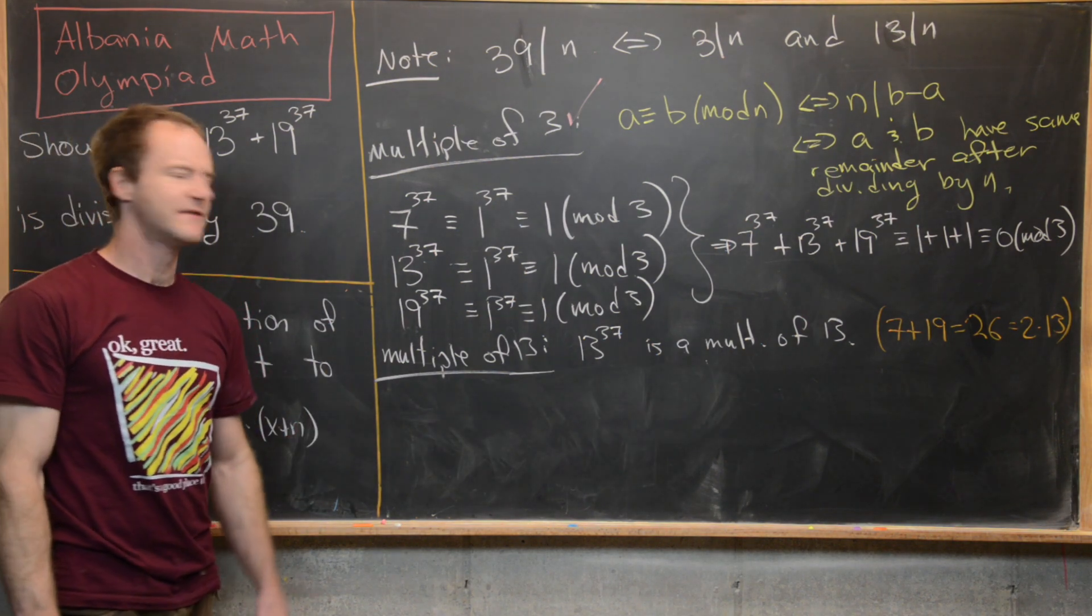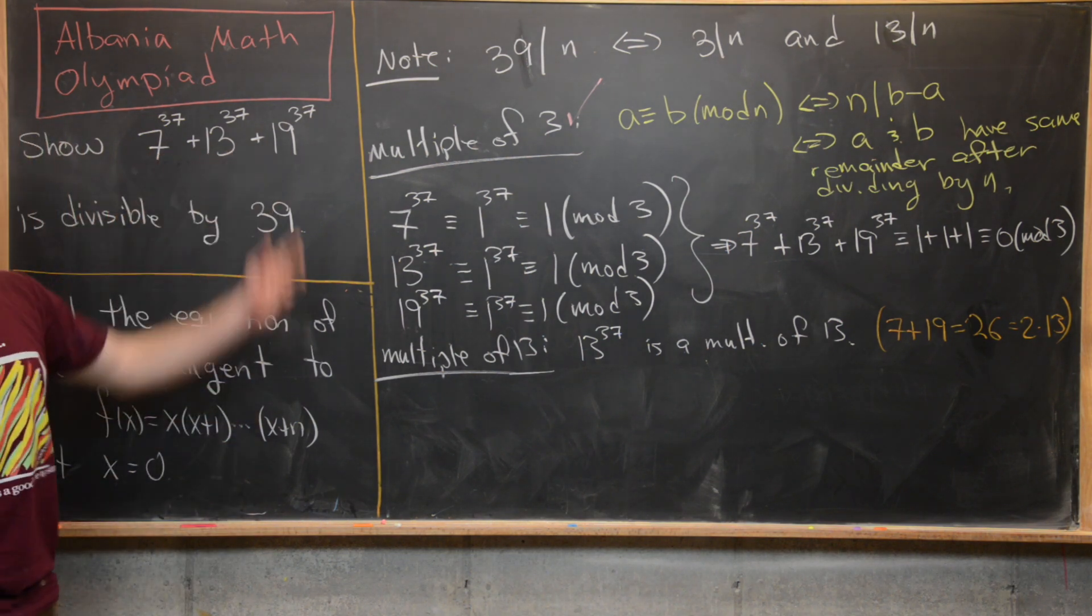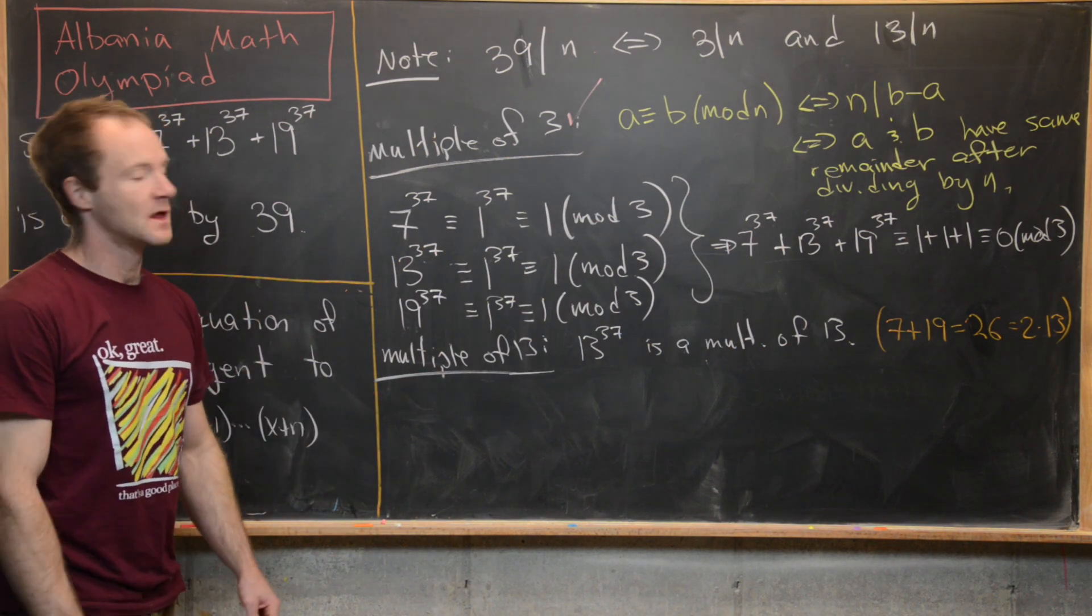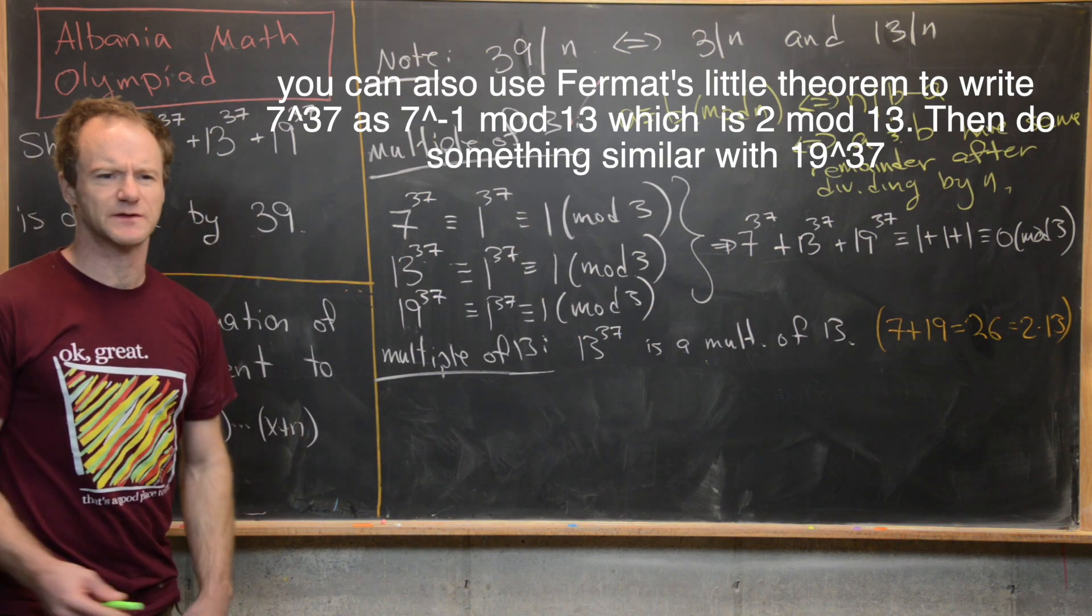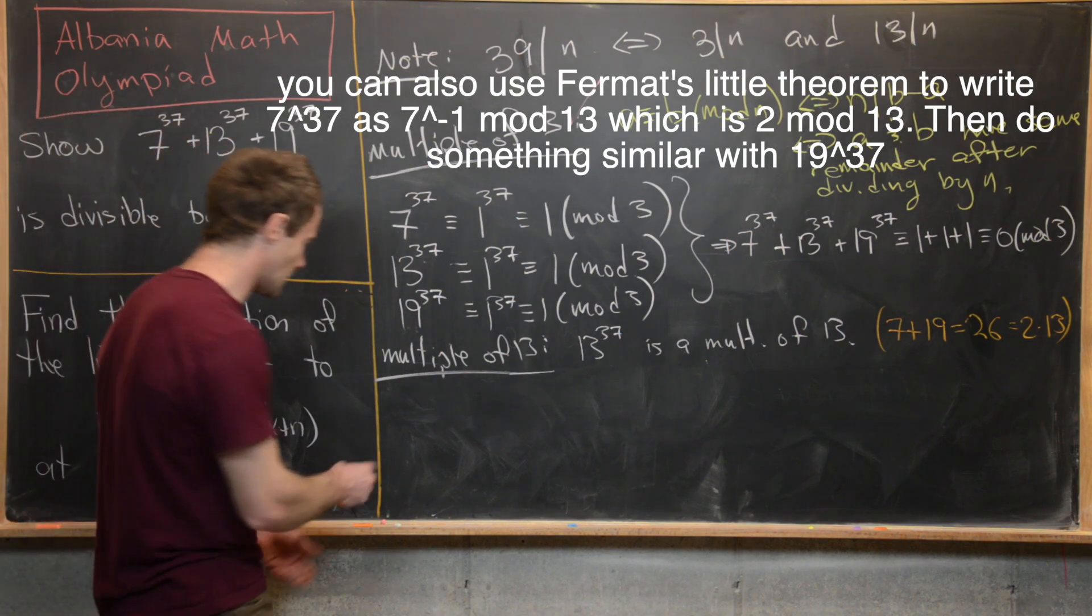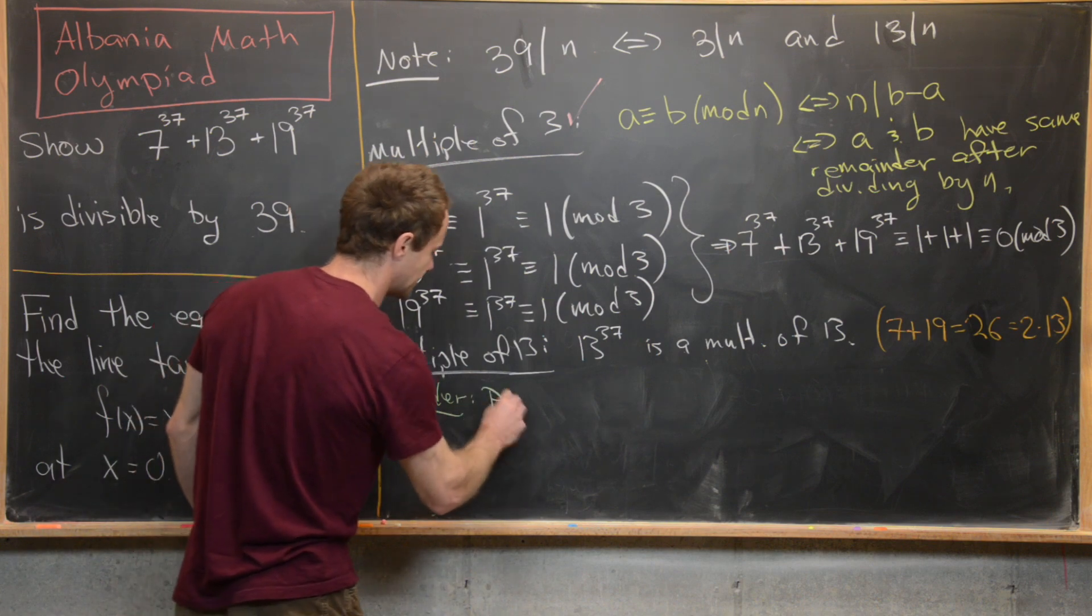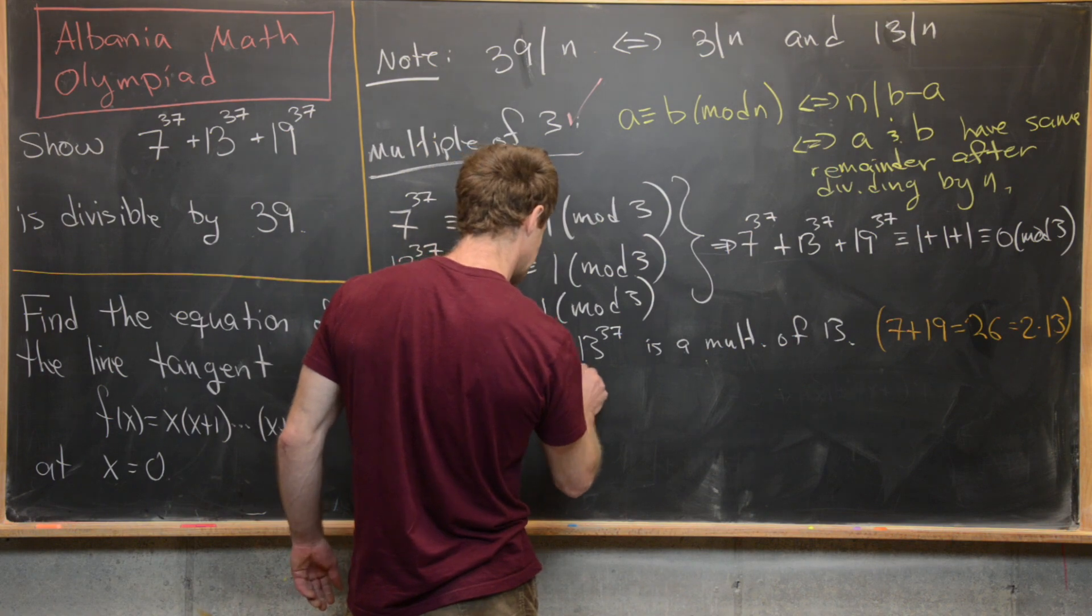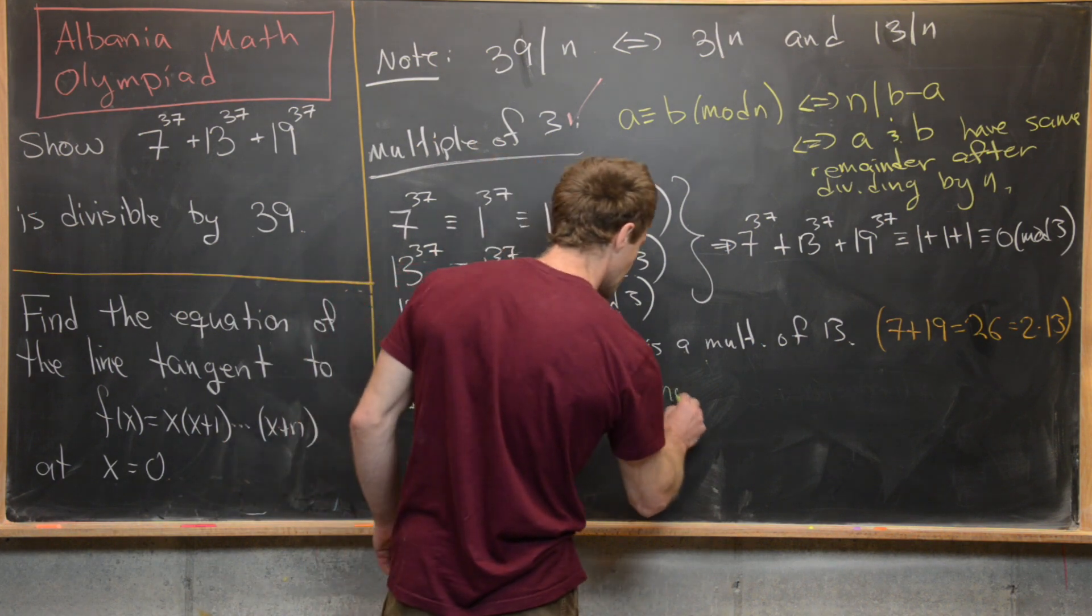And that would be to factor this 7^37 + 19^37 and write it out like really carefully. But what I want to use is something a little bit more powerful. And that's a result from factorization of polynomials over integers. So I want to consider the following polynomial. So I'm going to notice that p(x) equal to x^37 + 7^37.